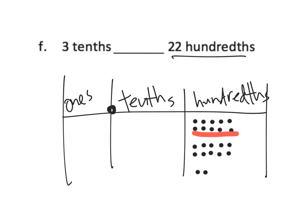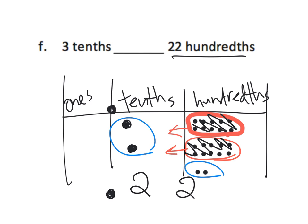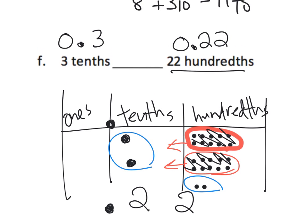We have to remember that ten hundredths equal one tenth, and then these ten hundredths also equal one tenth — so those get exchanged. What do we end up with? We end up with two tenths and two hundredths left over. So really this is 0.22, and the other is 0.3. We can see that three tenths is larger than two tenths.